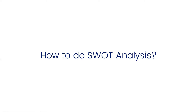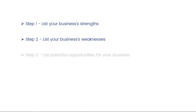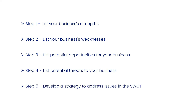Now let's see how to do a SWOT Analysis. Step 1: list your business's strengths. Step 2: list your business's weaknesses. Step 3: list potential opportunities for your business. Step 4: list potential threats to your business. And Step 5: develop a strategy to address issues in the SWOT.